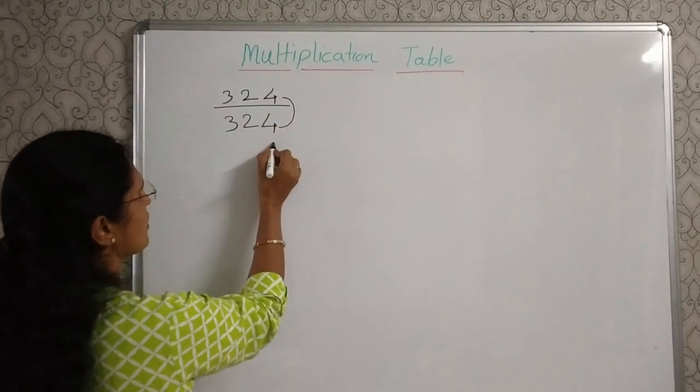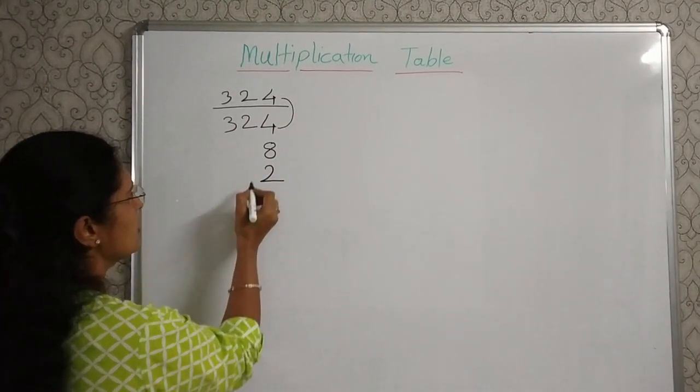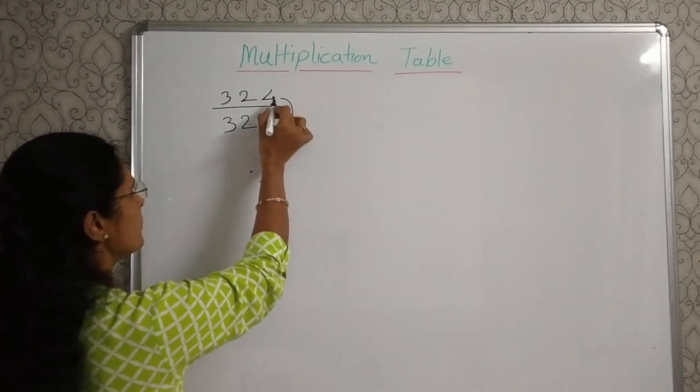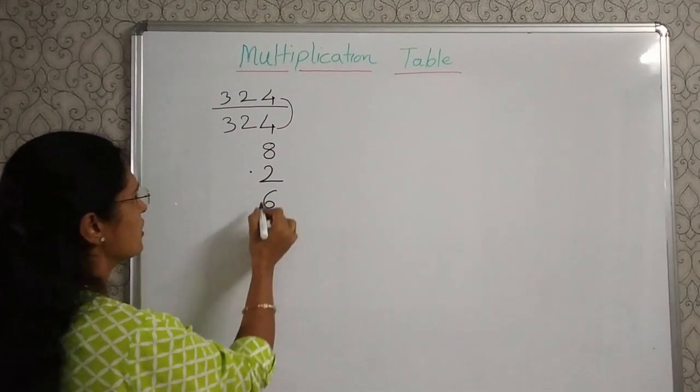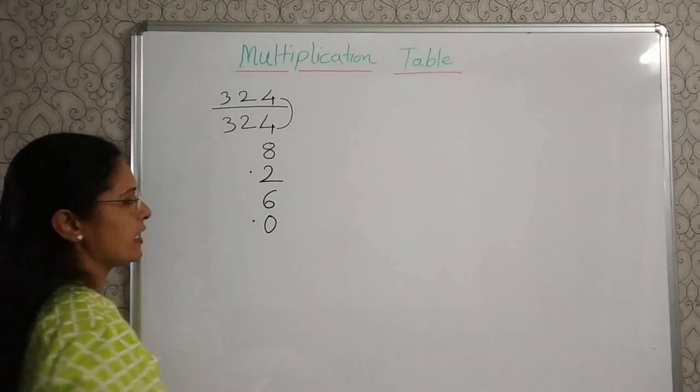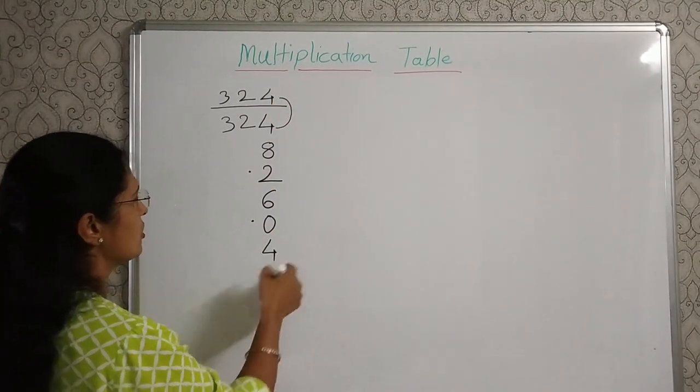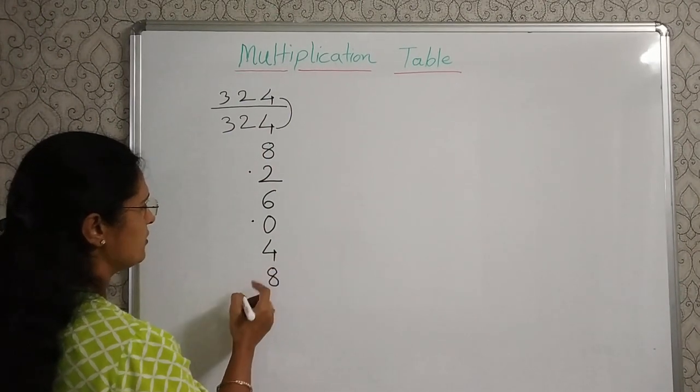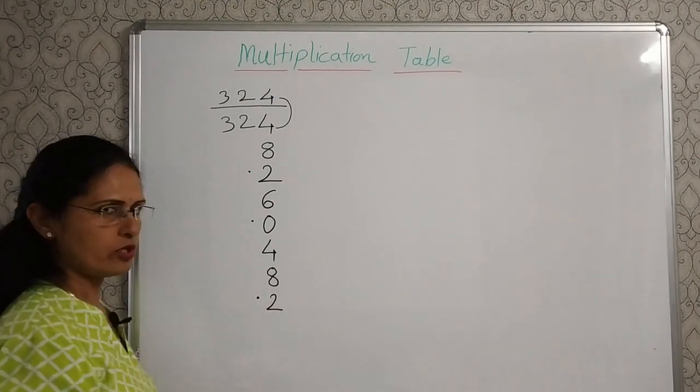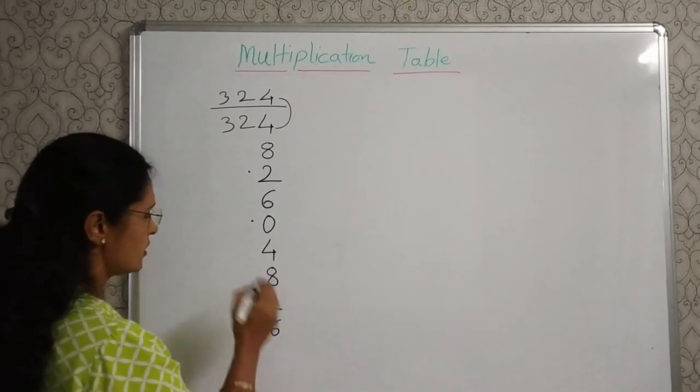So 4 plus 4, 8. 8 plus 4, 12, and the one carry over, so put a dot here. 2 plus 4, 6. 6 plus 4, 10. Again for the carry over put a dot. 0 plus 4, 4. 4 plus 4, 8. 8 plus 4, 12. Again a dot for the carry over.